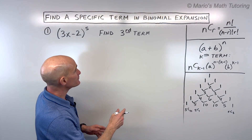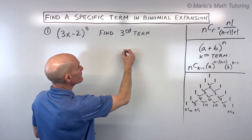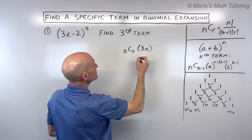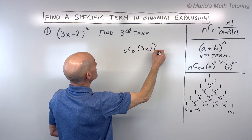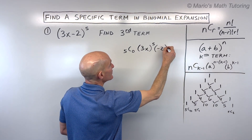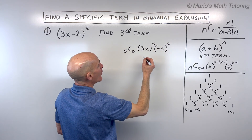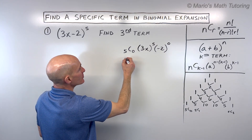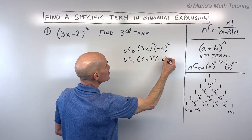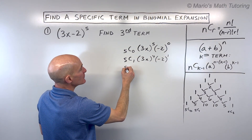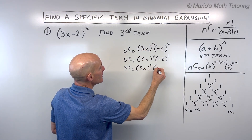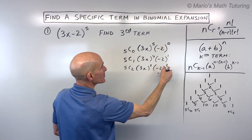When we do an expansion, we write it like this: 5C0 times the first term 3x to the fifth power, times the second term negative two to the zeroth power. For the next term: 5C1, 3x to the fourth, negative two to the first. Notice I'm taking the first term in descending order and the second term in ascending order.